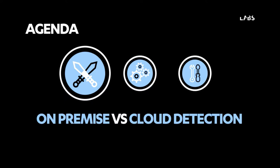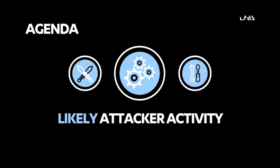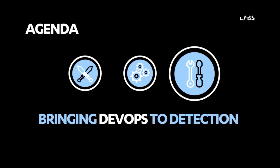So first up, we're going to be talking about the differences between on-premise and cloud attack detection, and there are quite a few key differences to focus in on. Secondly, what's an attacker likely to do? What are they going to try in your environments? And then lastly, there's an awful lot we can learn from DevOps — tips and tricks that really help level up your cloud attack detection capability long term.